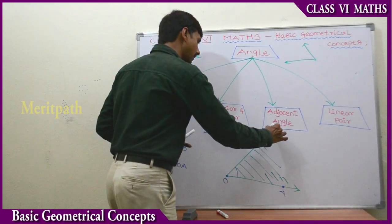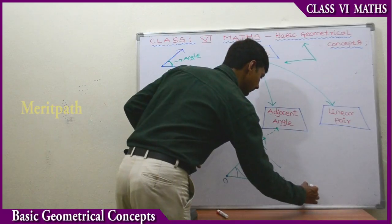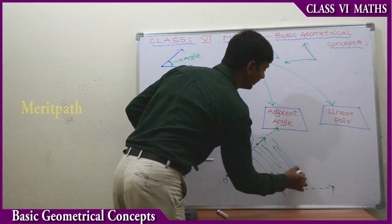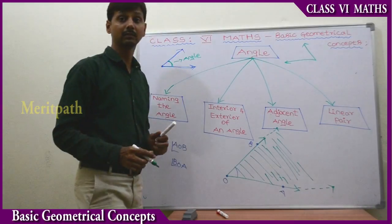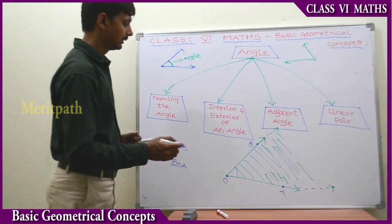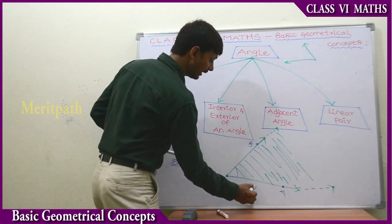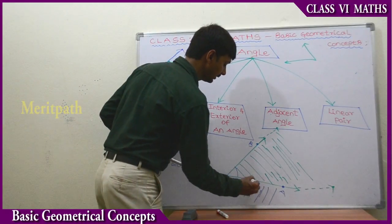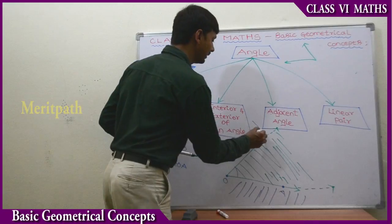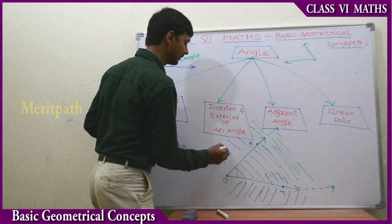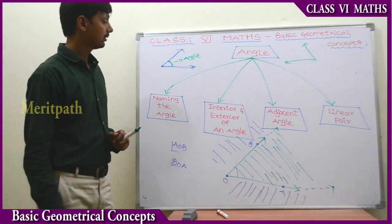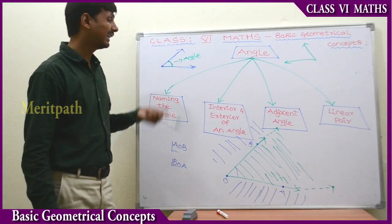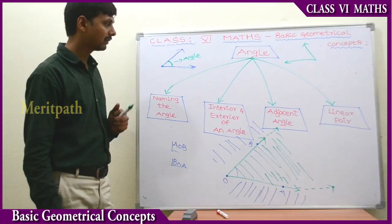If we extend this point and all the sides, all this part becomes the interior part of an angle. The region formed outside of all sides of the angle is called the exterior of an angle. This is the concept of interior and exterior of an angle.